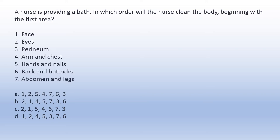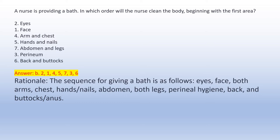A nurse is providing a bath. In which order will the nurse clean the body, beginning with the first area? 1. Eyes. 2. Face. 3. Arm and chest. 4. Hands and nails. 5. Abdomen and legs. 6. Perineum. 7. Back and buttocks. Rationale: The sequence for giving a bath is: eyes, face, both arms, chest, hands, nails, abdomen, both legs, perineal hygiene, back and buttocks, anus.